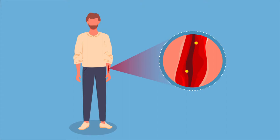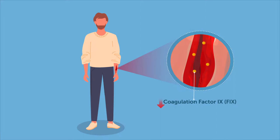Patients with hemophilia B are at constant risk of serious bleeding because their blood contains insufficient coagulation factor 9, or F9.